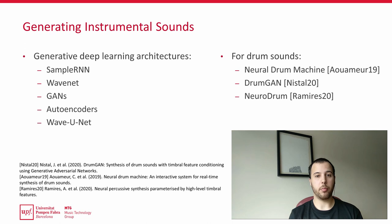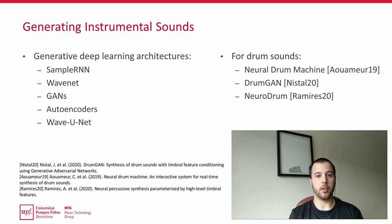DrumGAN uses progressive growing to generate drum sounds from high-level features previously used in NeuroDrum. This last model also uses the WaveNet, which generates audio with lower quality than DrumGAN, but allows for faster training and inference times.